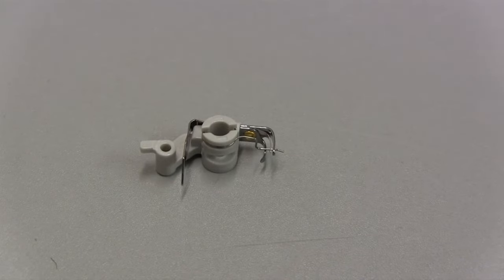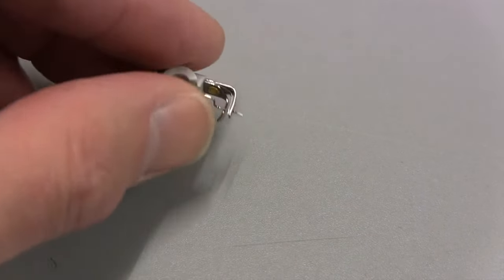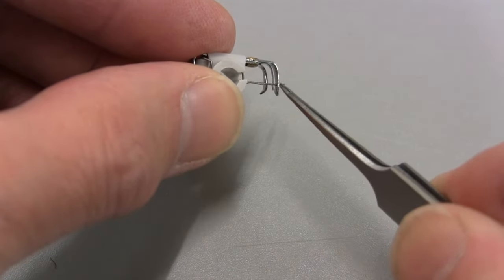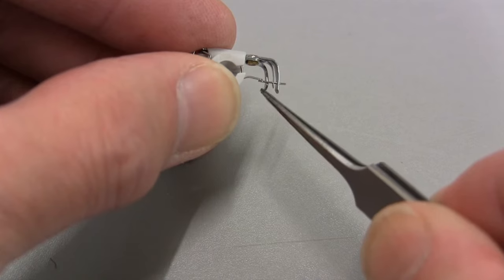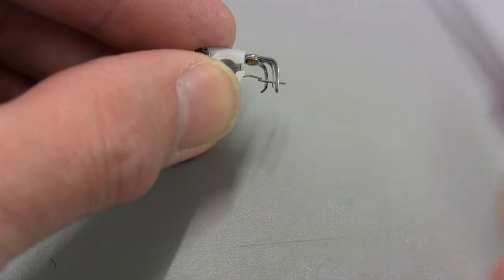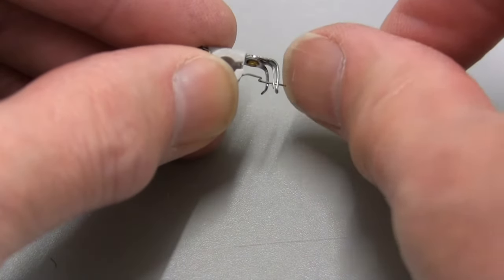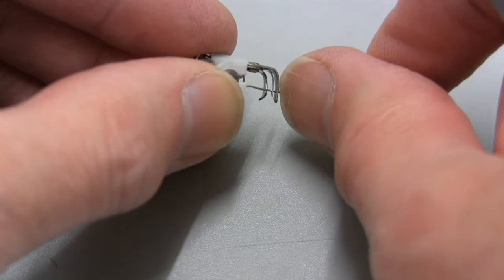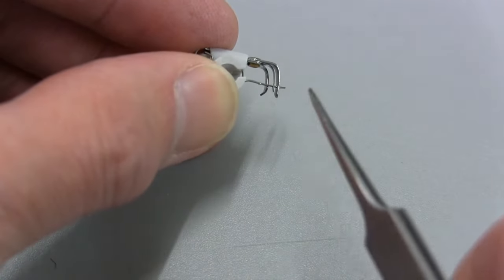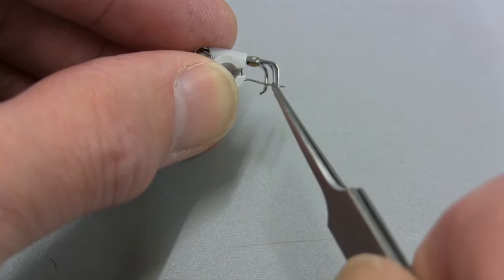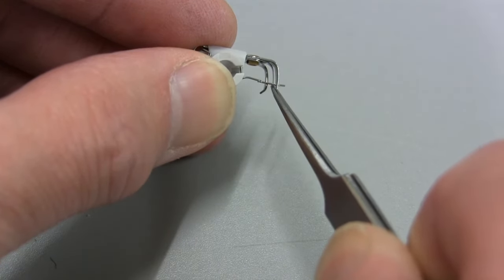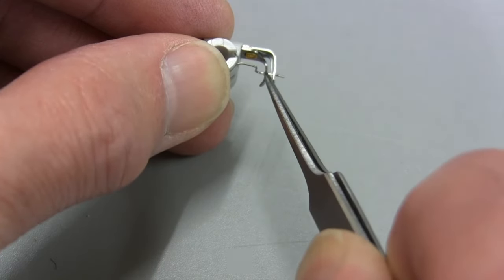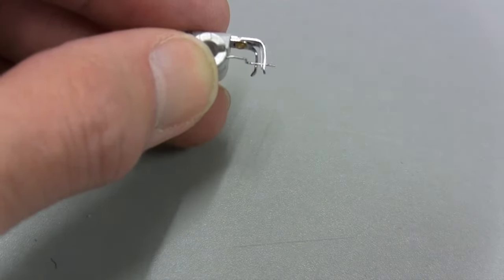This is a needle threader removed from the machine. What we have is a guide here, a guide here, and a piece of sprung metal just here which is actually located behind the hook itself of the threader. The threader is a tiny sliver of metal right in between those two guides, more to the right-hand side of the guide than the left-hand side if it's in the right position.